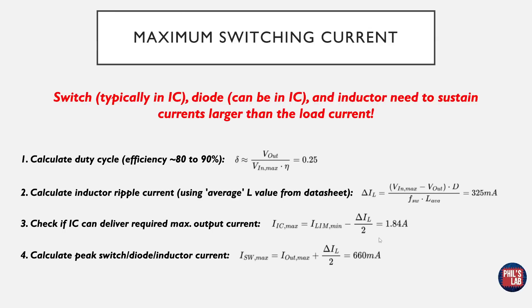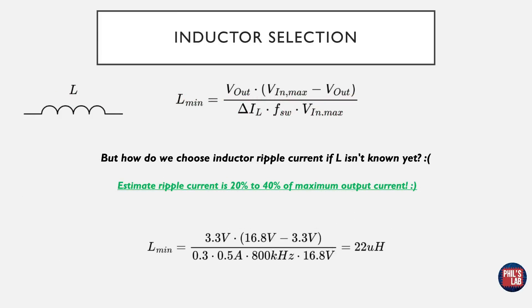The last part of this calculation is then to calculate the actual maximum switching current, and this is simply the maximum output or load current plus half the inductor ripple current. So it's 500 milliamps plus half of 325, which is approximately 660 milliamps. So this is the critical value, which is essentially the peak switch, diode, and inductor current that our circuitry needs to be able to sustain. So it's not 500 milliamps, it's higher, it's 660 milliamps. I'm afraid component selection for switching regulators is quite calculation heavy, but this should hopefully be a guide that you can use for all of your circuits that require buck converters.